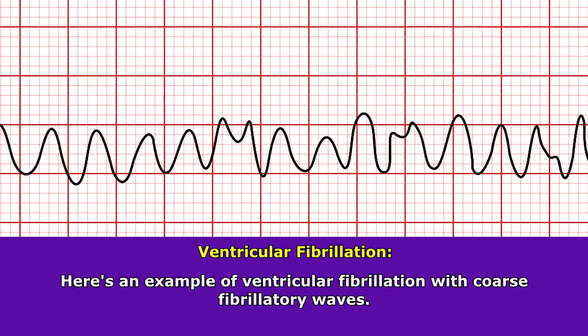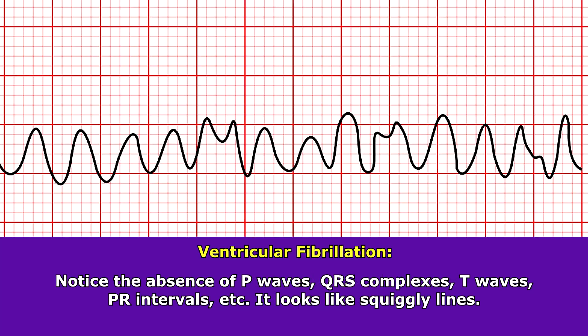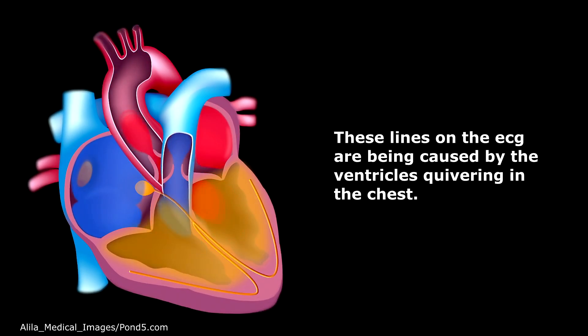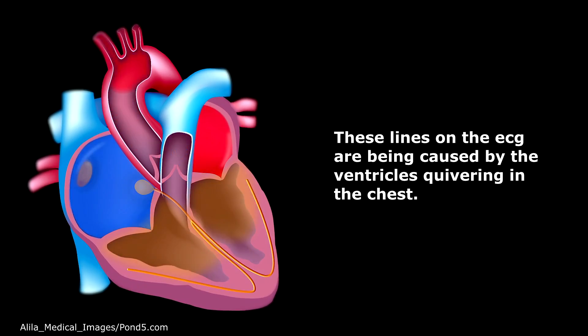This is actually coarse fibrillatory waves. Notice you cannot find P waves, QRS complexes, or T waves — really what it looks like is just a bunch of squiggly lines on the ECG strip. And these lines are being produced from our ventricles, which are just sitting in the chest quivering, not contracting like they should.